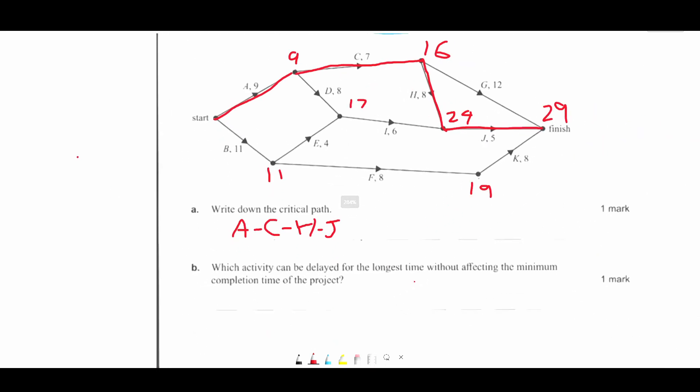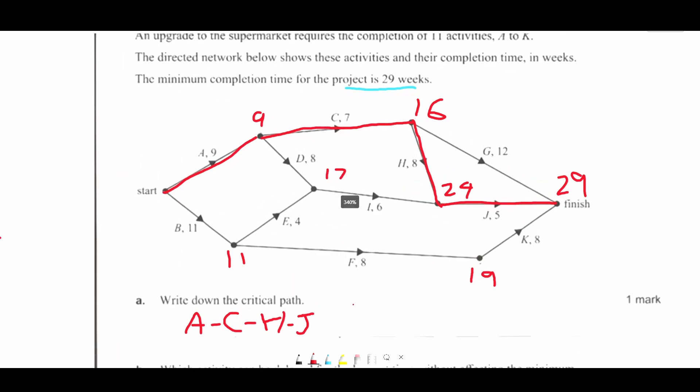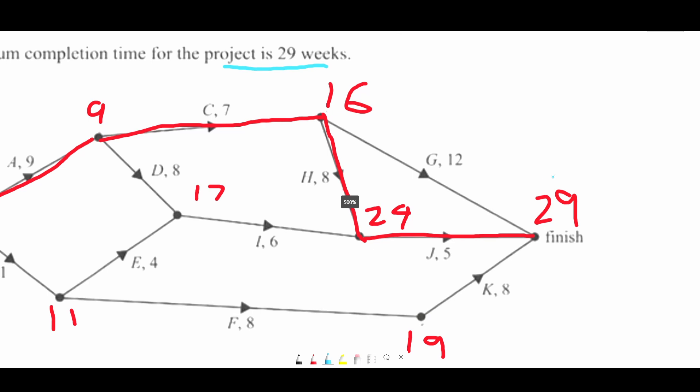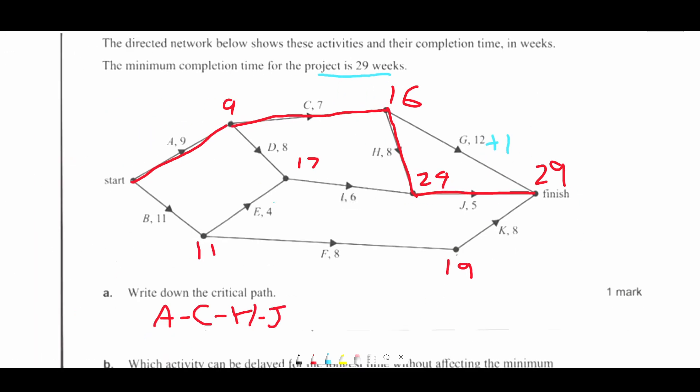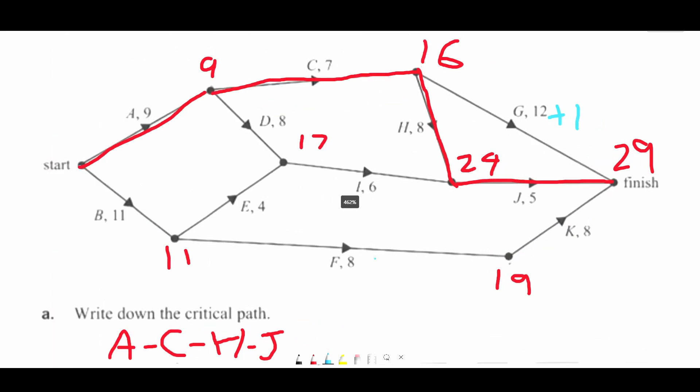Which activity can be delayed for the longest time without affecting the minimum completion time? Well, obviously it can't be anything on the critical path. So we're left with these bottom activities here and then these middle activities here. If we look at the length, this is 8 and this is 5, which equals 13. So this could technically be delayed by 1. Down here, this is 11 and this is 8 and this is 8. So 11 plus 16 is 27. So realistically, these two things can be increased by plus 2.